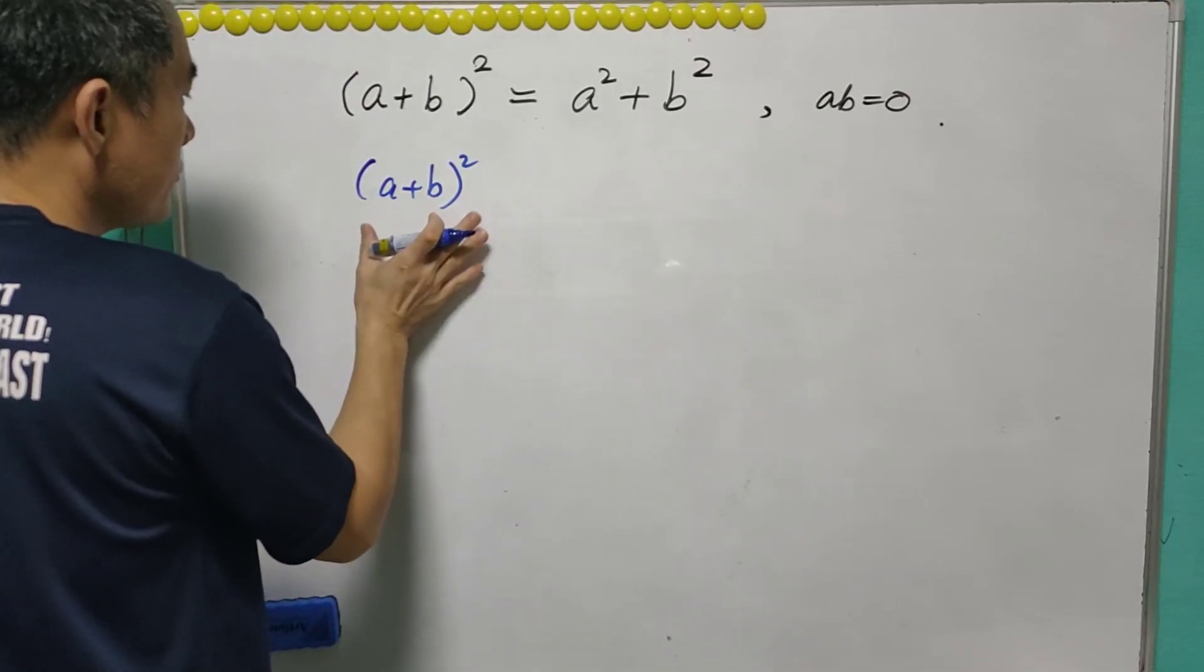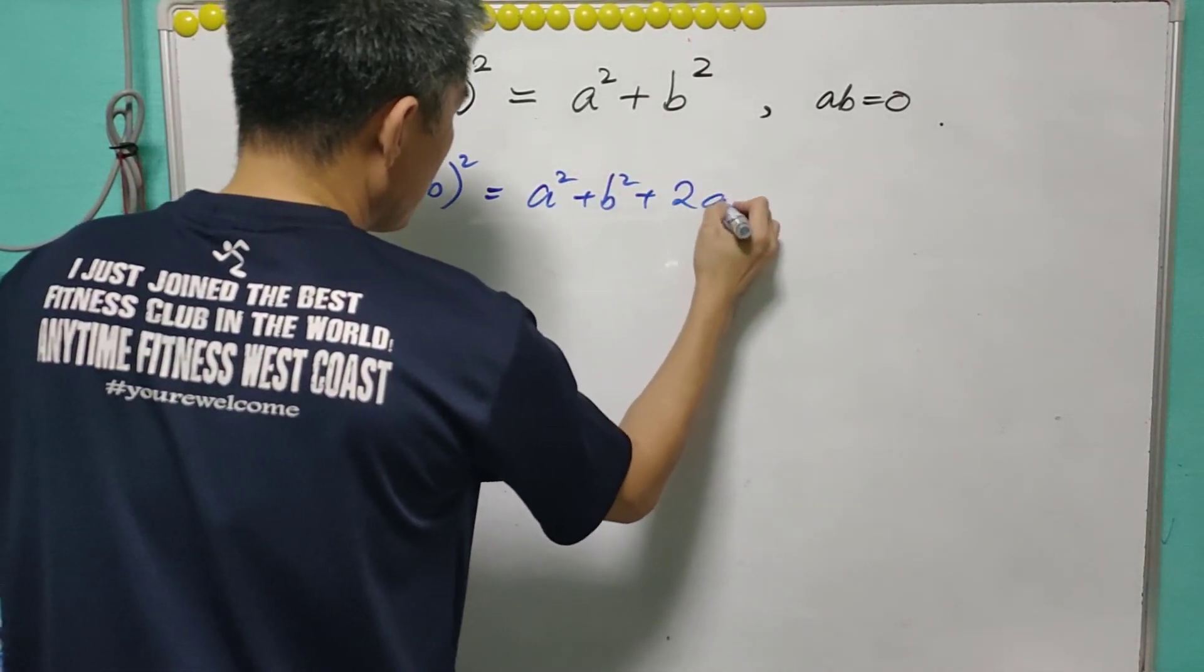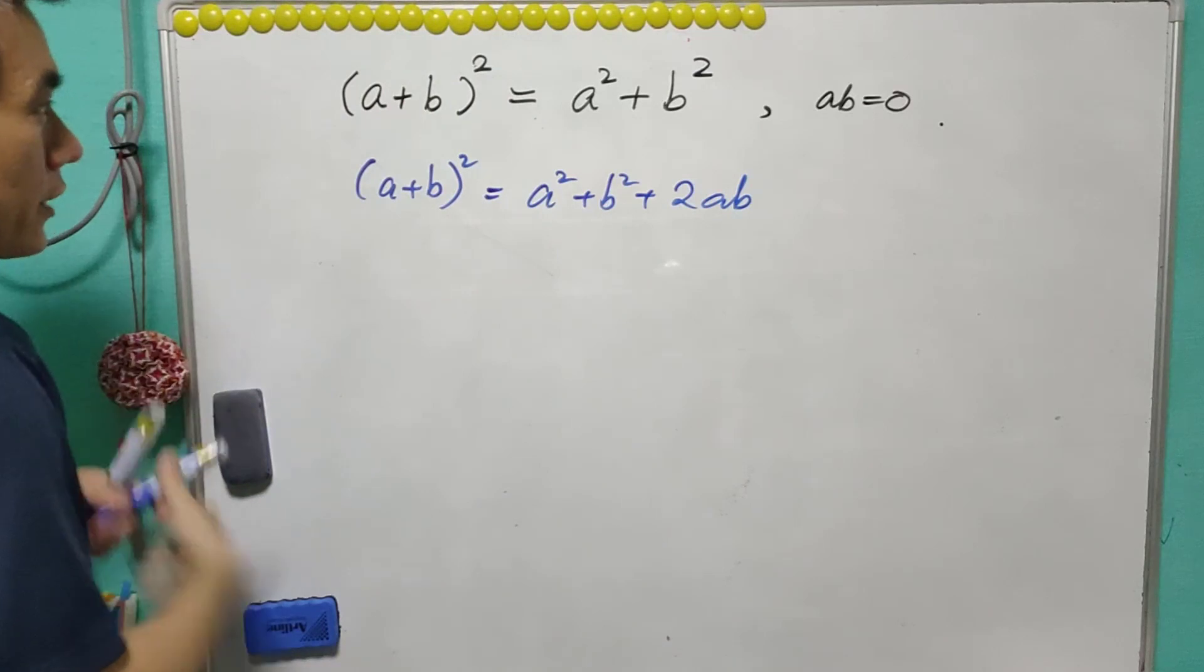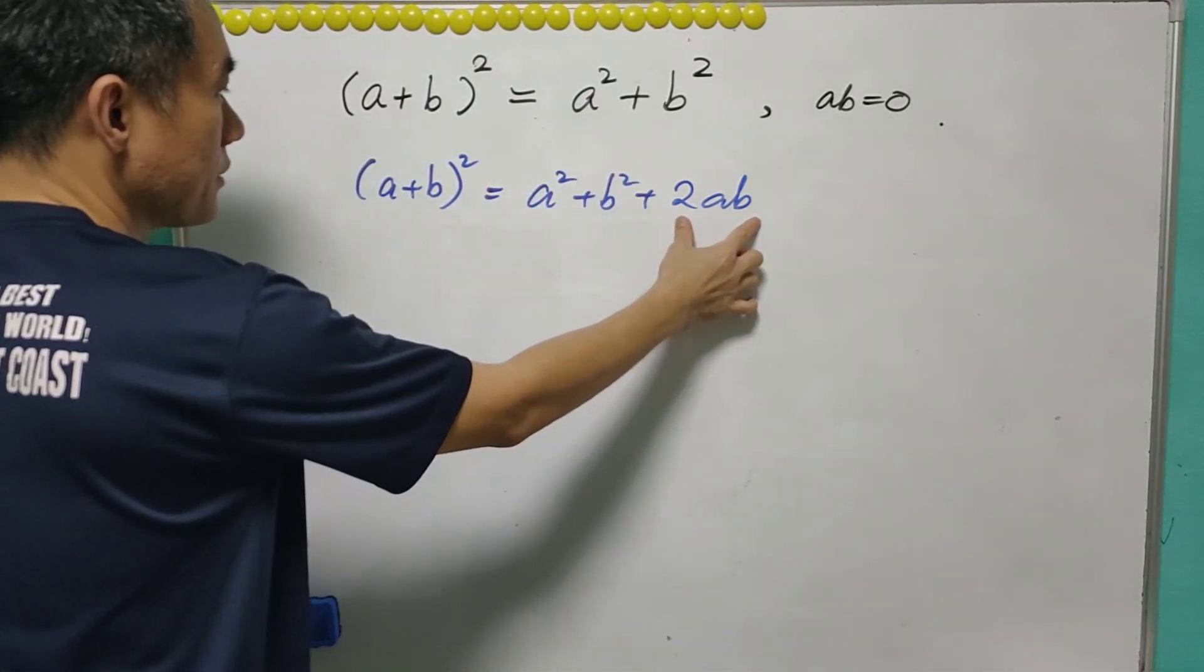And the correct expression for square of a plus b is a square plus b square plus 2ab. That's right, it can be equal to a square plus b square if ab equals to zero.